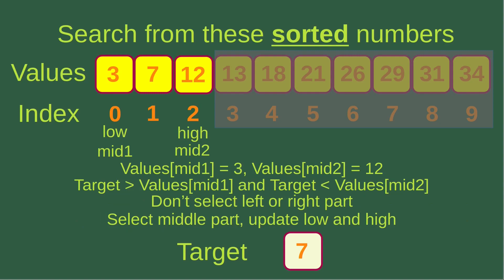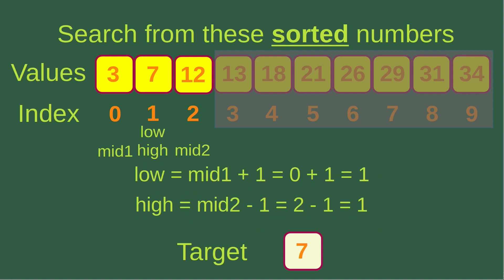Now we see that mid one corresponds to number three in the array, and mid two corresponds to 12. The target is larger than the mid one value, and the target is also smaller than the mid two value. In this case, we don't select the right or left part — instead, we select the middle part and then we update the low and high indices. The low index is changed to mid one plus one, which is one, and the high index is changed to mid two minus one, which is also one.